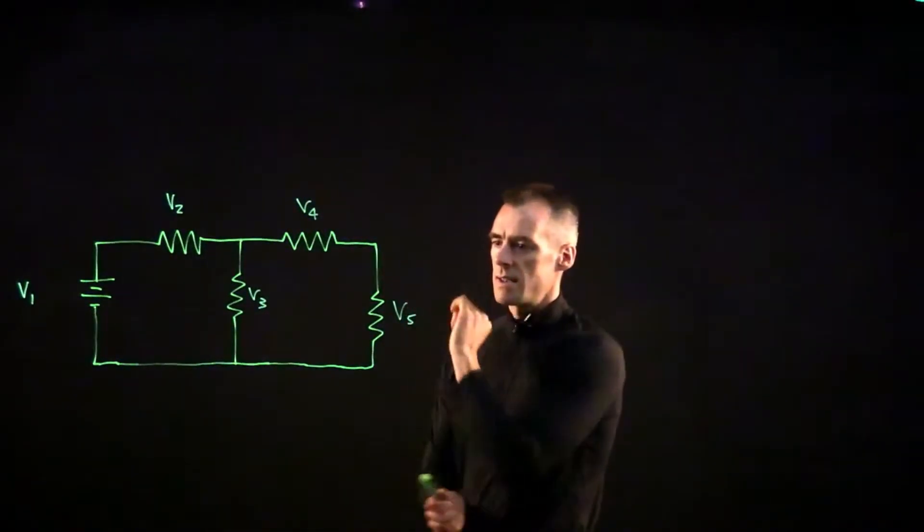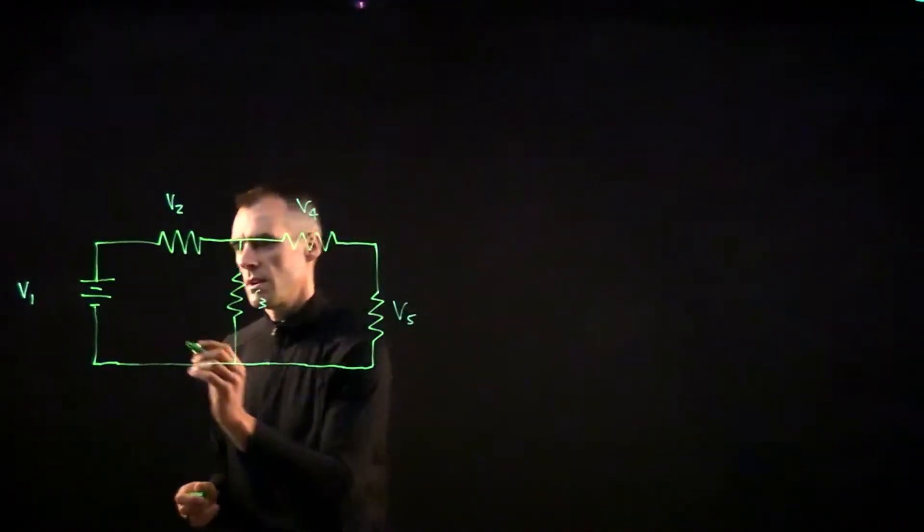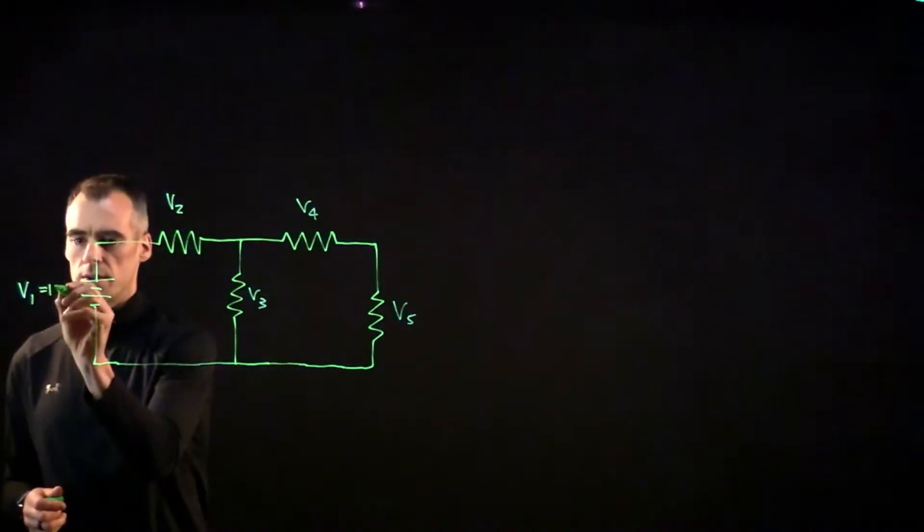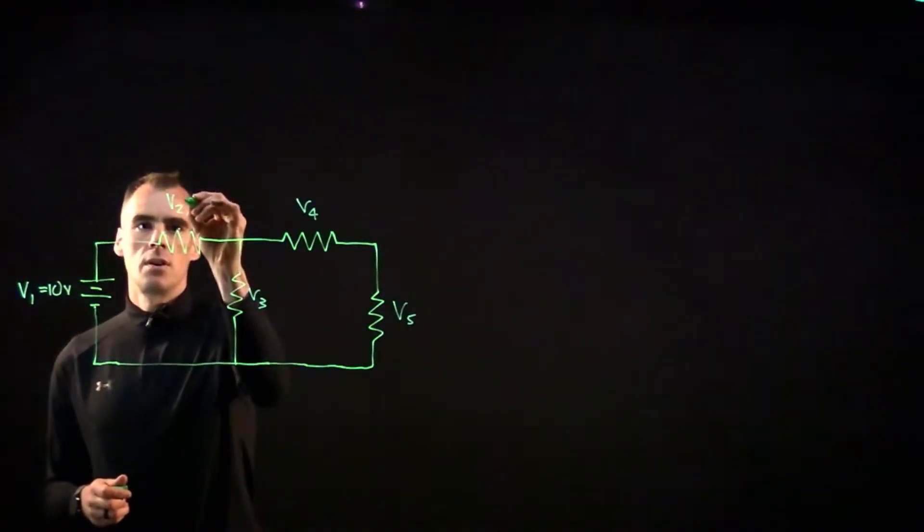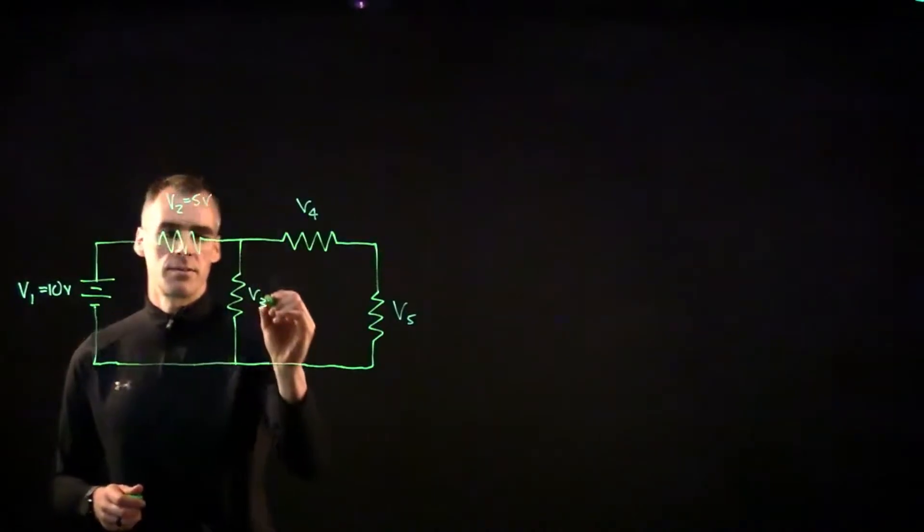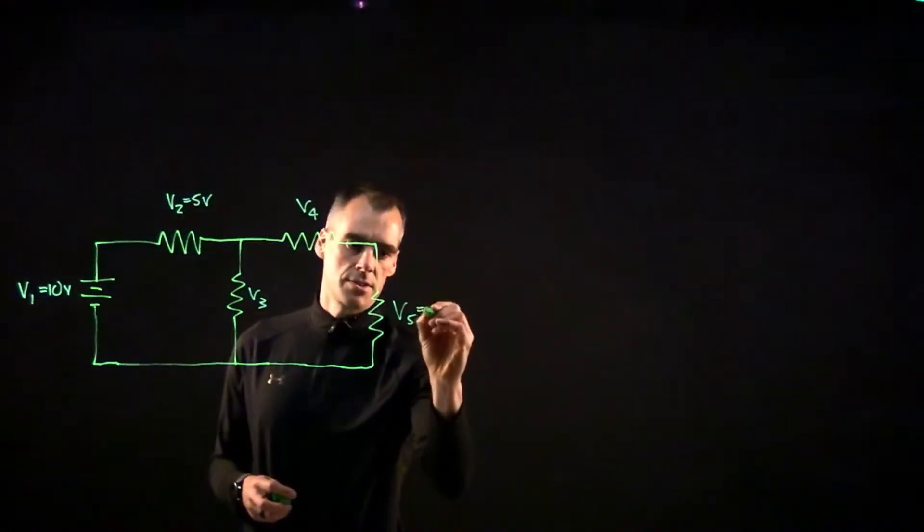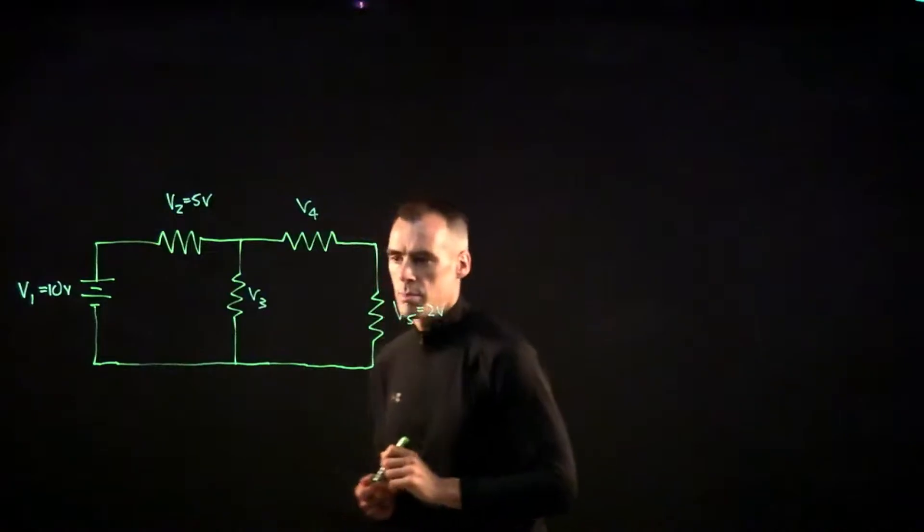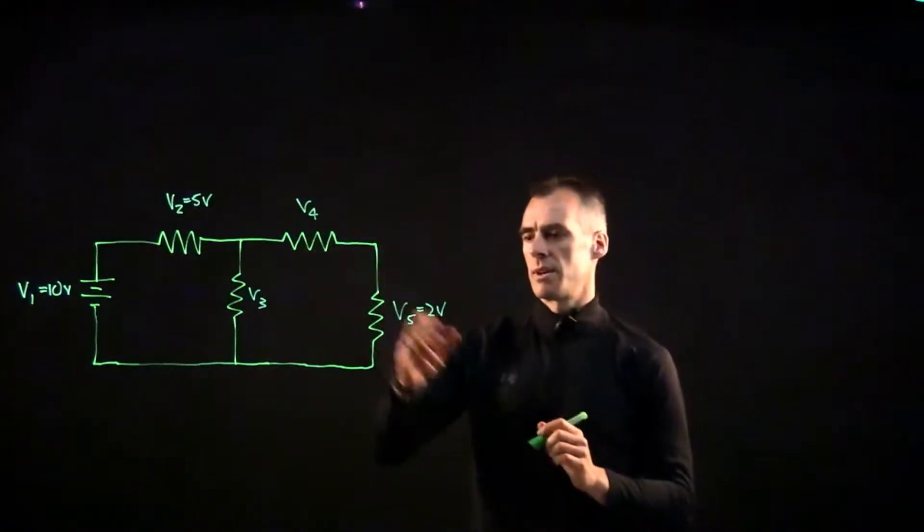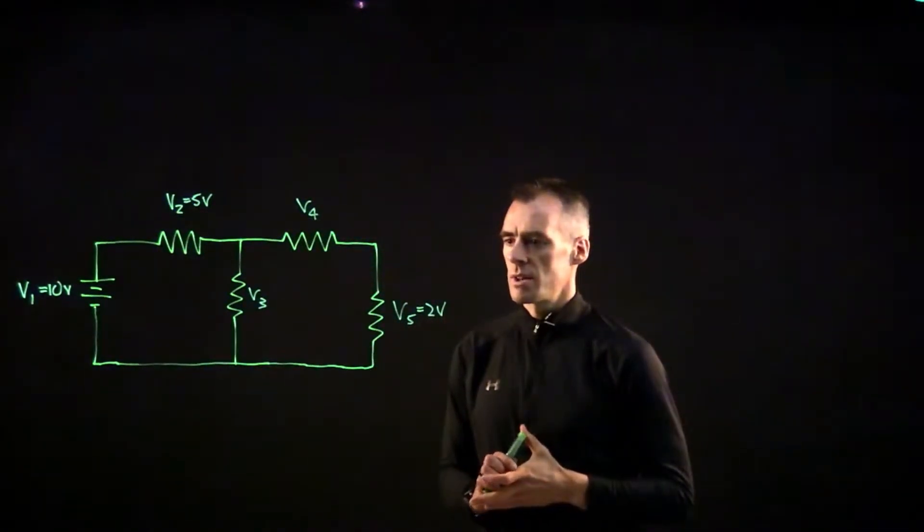Okay, so here's the circuit. Let's say in this problem we were given V1, this source voltage we know is 10 volts. We're given V2, in this case 5 volts, and we're given V5, which is 2 volts. Given that, we can pretty simply find V3 and V4 using Kirchhoff's voltage law.